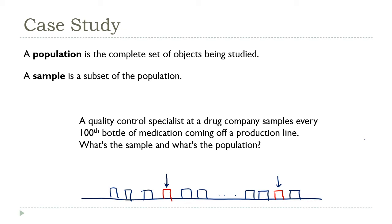Identifying a reasonable population can be a little tricky. You always want to define this narrowly. So in this case, a reasonable choice would be all of the bottles from the same production run as the sample. Anything broader than that — for example, all the bottles produced on a given day — would probably be too much, because if the machines have to be reset or resupplied, that could cause errors in an afternoon batch that you didn't see in the morning's.